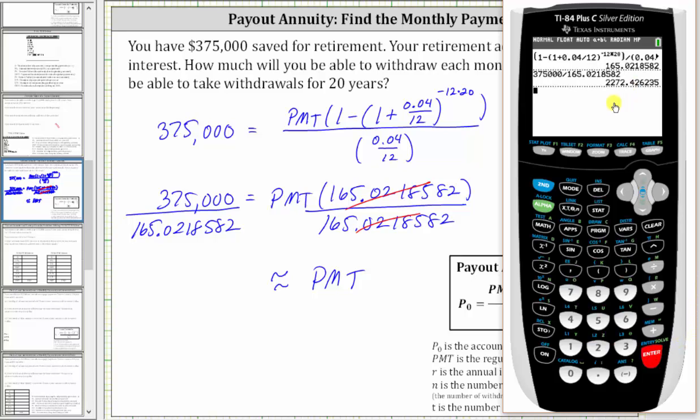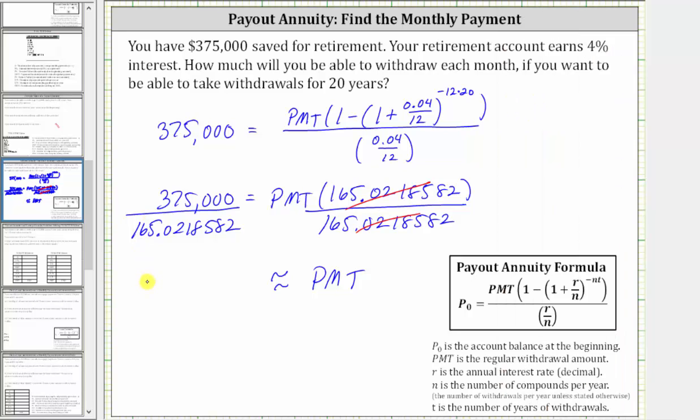Enter. To the nearest cent, we have $2,272.43. So we now know you can withdraw $2,272.43 each month for 20 years. I hope you found this helpful.